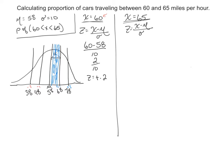And let's do the same thing over here with the upper score of 65 miles an hour. Again, minus 58 of the average, and then 10 standard deviations.